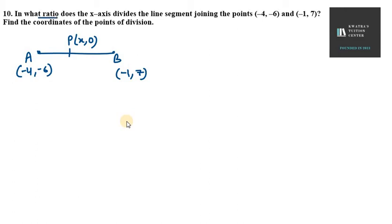So here we will make use of section formula. Because here we need to find the ratio. And if the ratio is not given, then how do we do it? Let K ratio 1. So M1 is K, M2 is 1.